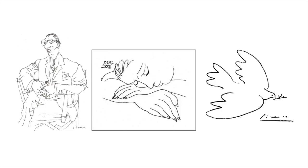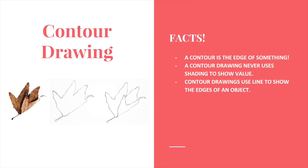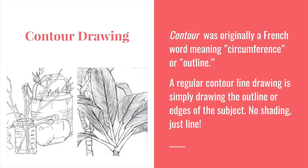Notice on the dove that we can tell exactly what it is by the way Picasso used contour line to define edges and outline any surface the dove might have. There are three different types of contour drawing. The first is contour drawing — it's the edge of something. Contour drawing never uses shading to show value; it uses line to show the edges of an object. Contour was originally a French word meaning circumference or outline. A regular contour line drawing is simply drawing the outline or edges of the subject — no shading at all, just line. Notice how using just contour drawing, the artist has all the detail and we can understand exactly what we're looking at.